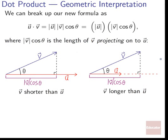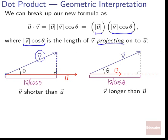Let's interpret this geometrically. We can break up u dot v = |u||v|cosθ into two pieces: the length of one vector times the length of the other vector's projection. The term |v|cosθ represents the length of v if we projected it onto u — like dropping a perpendicular down from the tip of v onto the line of u. That gives us the shadow v would cast on u.